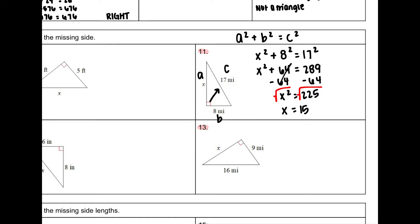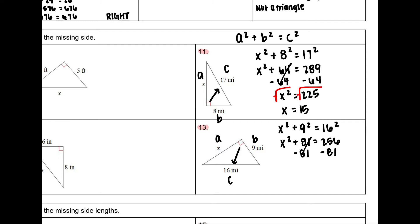Number 13 is similar — we're given two sides. I label everything with A, B, and C first. Looking across from my 90-degree angle gives me the hypotenuse, so 16 is C, and my other two legs are A and B. We have X squared plus 9 squared equals 16 squared. Simplifying: X squared plus 81 equals 256. I subtract 81 from both sides, leaving X squared equals 175. So X equals the square root of 175.